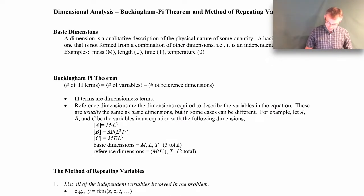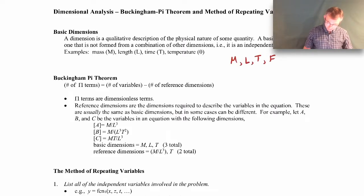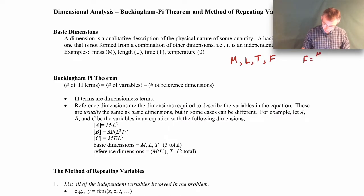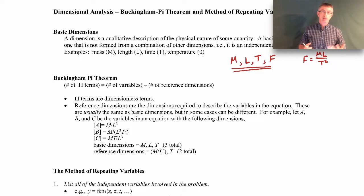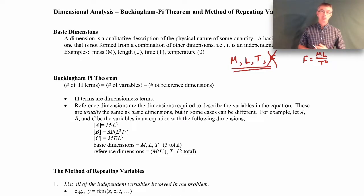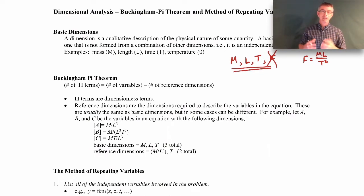A basic dimension is a dimension that's not formed from some combination of other dimensions. For example, if we have mass, length, time, and force — those are not all independent. A force can be produced using mass, length, and time squared: force equals mass times length over time squared, which is just F equals ma. So those four are not independent of one another and wouldn't all be basic dimensions. If we remove force, we have three basic dimensions — mass, length, and time — which are completely independent of one another.